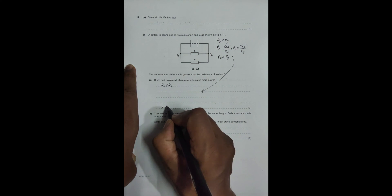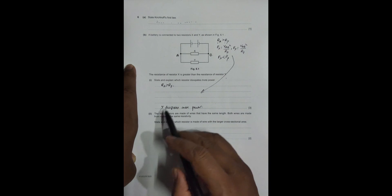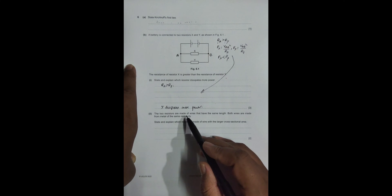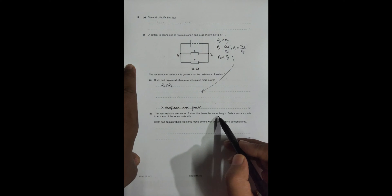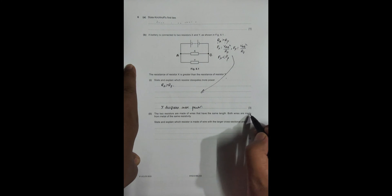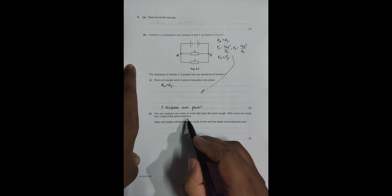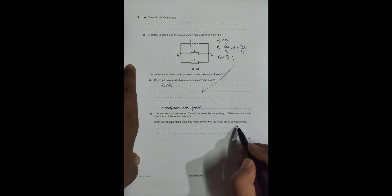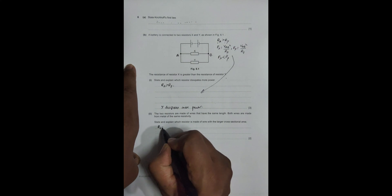Now the two resistors are made of wires that have the same length. Both wires are made from metal of the same resistivity. We need to explain which resistor is made of wire with the larger cross-section. I have RX = ρL/AX...